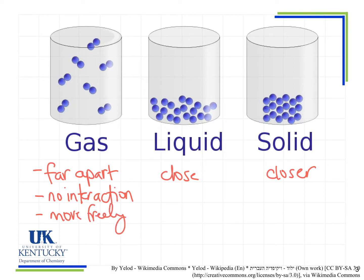Unlike liquids and solids where the molecules are interacting with one another through intermolecular forces, in gases we don't see that happening. In liquids and solids we have to worry about intermolecular forces because the particles are close enough to interact with one another, and that's not the case with gases. This allows us to start predicting the behavior of a gas when we start changing things like the pressure, the volume, or the temperature.